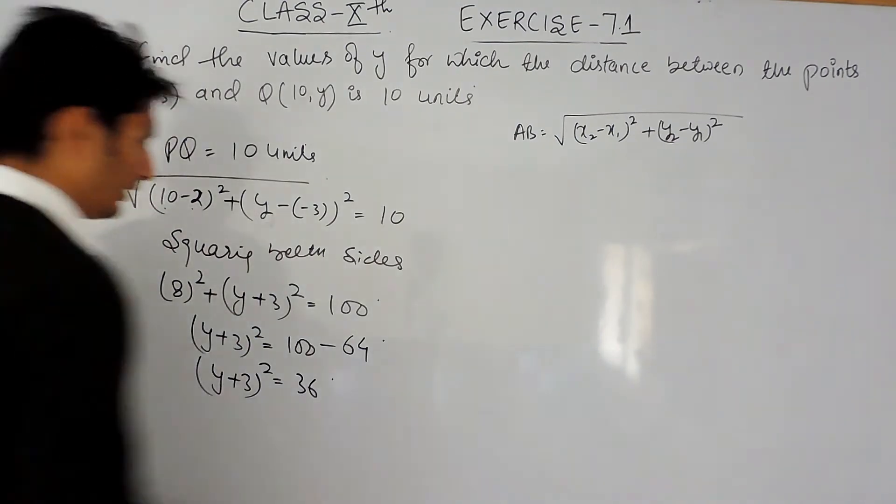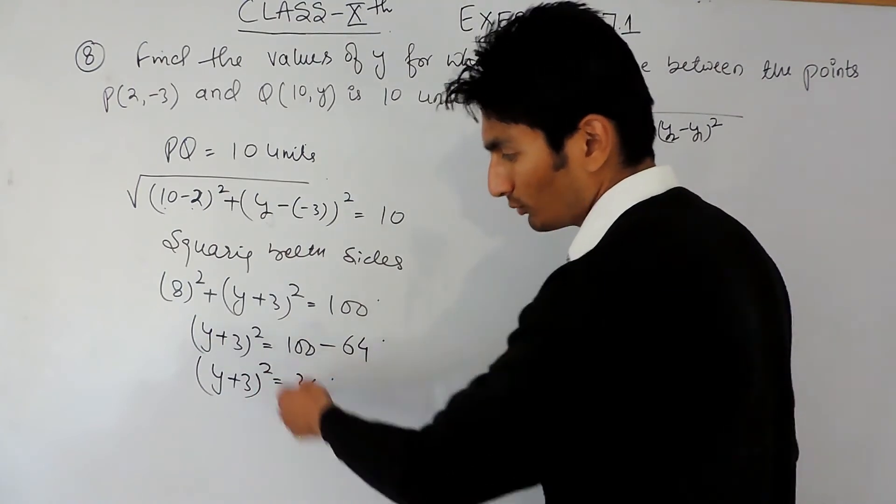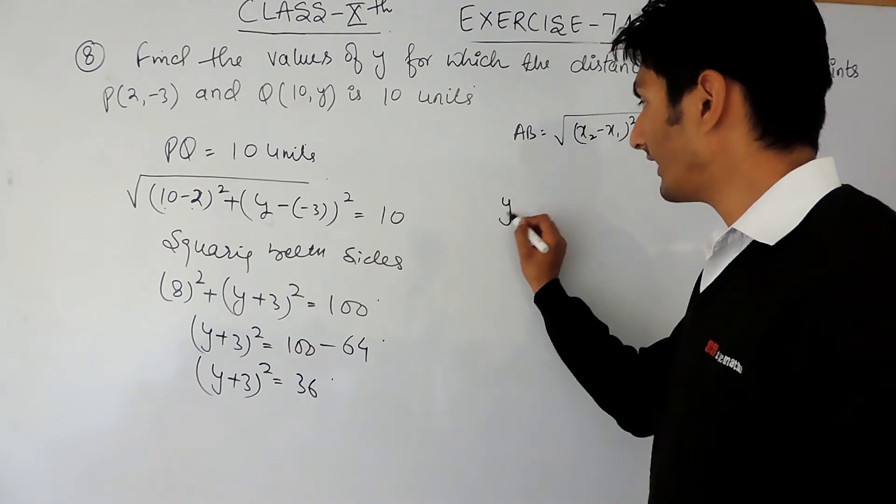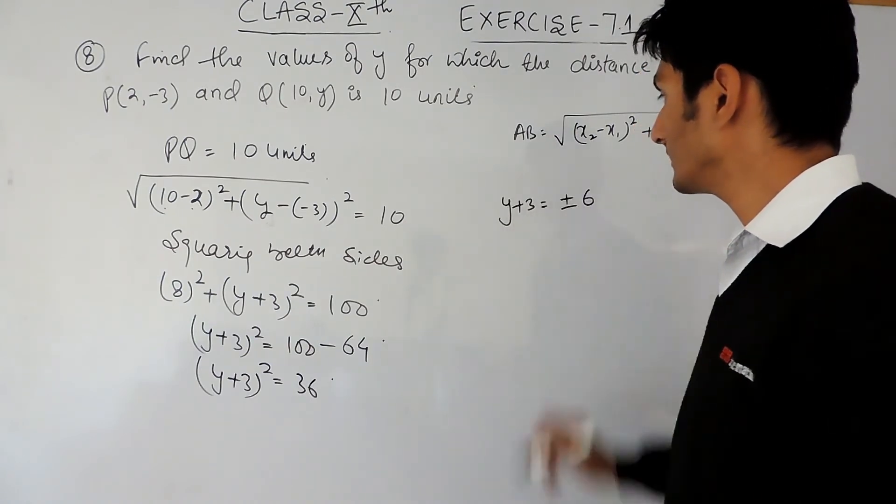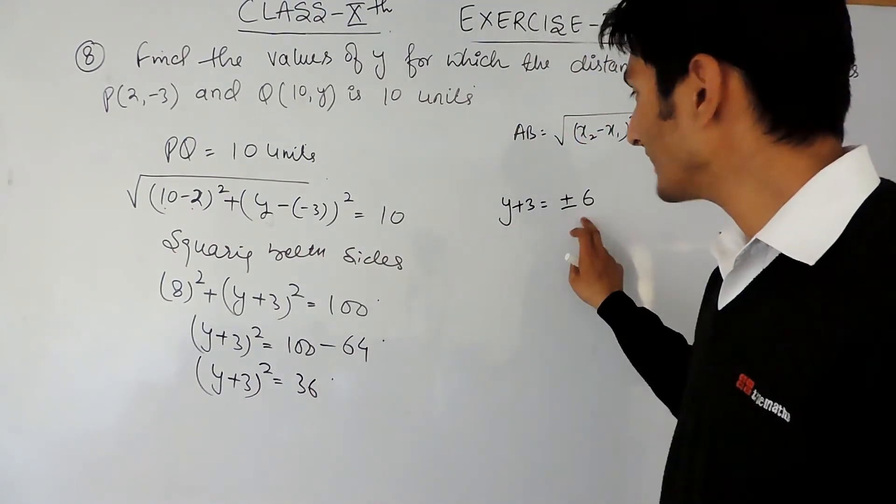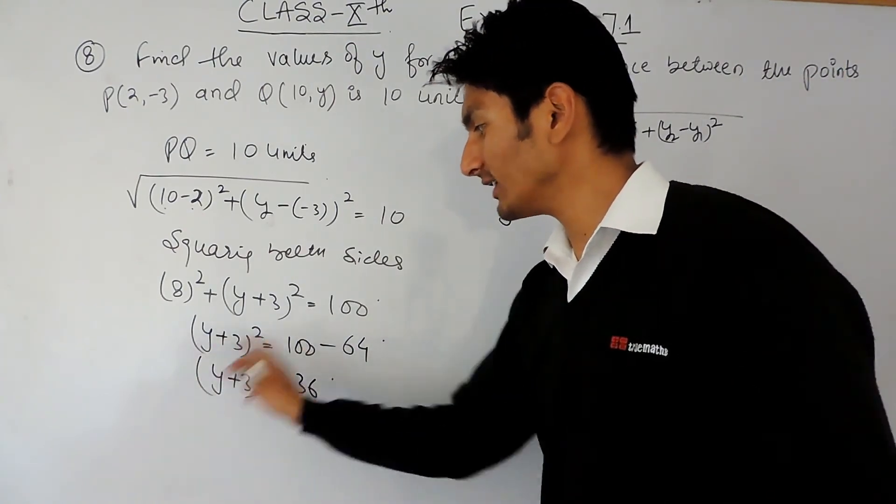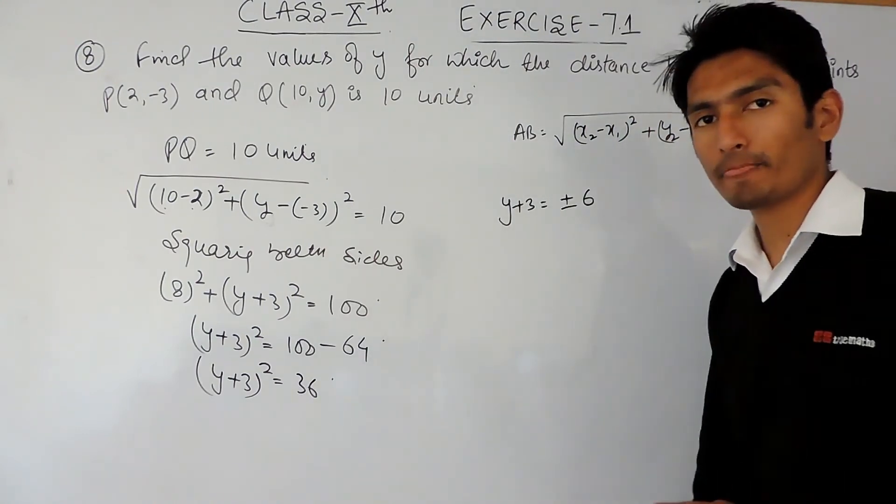I have to remove this square, so square root both sides. Y plus 3 will be equal to plus minus 6 because the square root of 36 is plus minus 6 and the square root and square will get cancelled out. So y plus 3 equals plus minus 6.